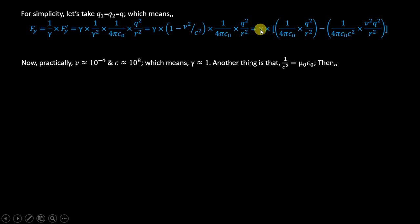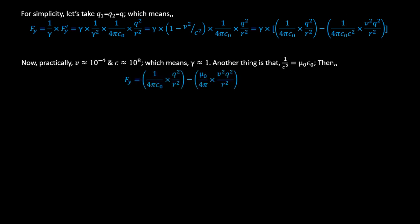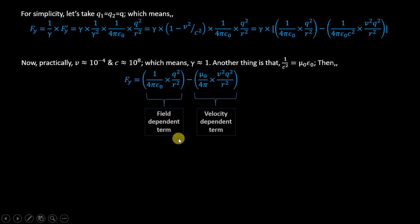With gamma = 1 and 1/c² = μ₀ε₀, substituting: ε₀ cancels, leaving μ₀ in the second term. So Fy = (1/4πε₀)(q²/r²) minus (μ₀/4π)(v²·q²/r²). The first term is the familiar electrostatic force; the second extra term is velocity-dependent and already looks like something magnetic. Going further, we actually recover the Biot-Savart law. This second term is the velocity-dependent term.